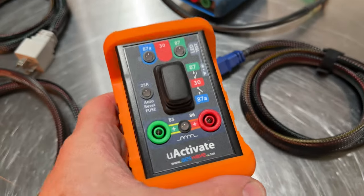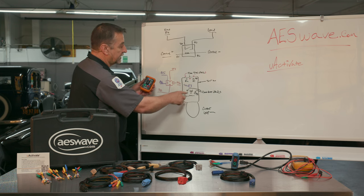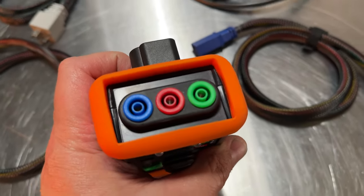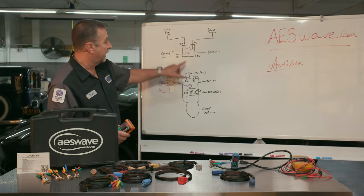So this is what the unit looks like. It's got two LEDs up here at the top, 87A and 87. And then you've got three banana jacks, four millimeter jacks up at the top for each of those circuits, including terminal 30. So you've got 30 here.